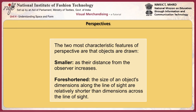Now we come to perspectives — the second part. First we did orthographic; now we will do perspectives. The difference between orthographic and perspective is that orthographic is a two-dimensional projection, while perspective is as the human eye perceives. Perspective is an approximate representation on a flat surface of an image as it is seen by the eye. The two most characteristic features of perspective are that objects appear either smaller or foreshortened. Smaller means as their distance from the observer increases, they get smaller. Foreshortened means the size of an object's dimension along the line of sight is relatively shorter than dimensions across the line of sight.